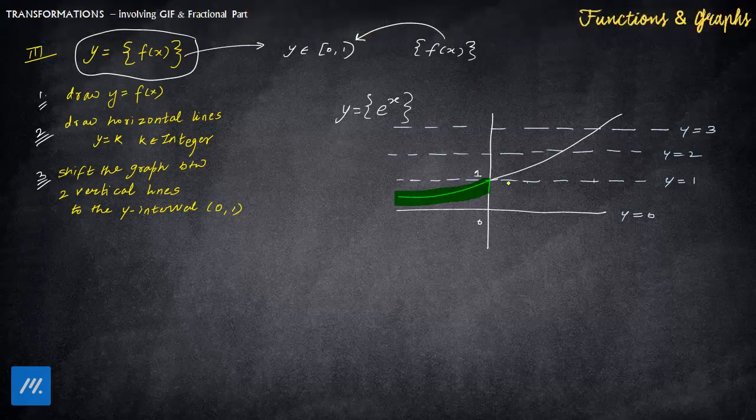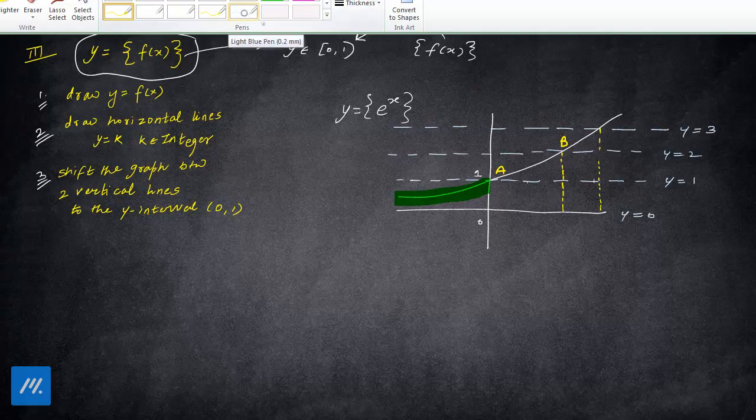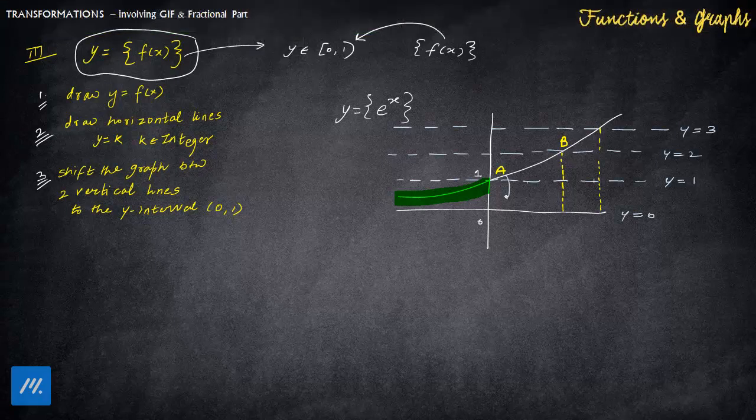Now coming here, so let's draw, this is the point of intersection with this graph. Let's draw vertical lines. So this entire graph between this particular point A and this particular point B, you just have to put this graph, let me just again take it very lightly, just shifted between 0 and 1 onto this particular region. This is the area where this graph will come to.